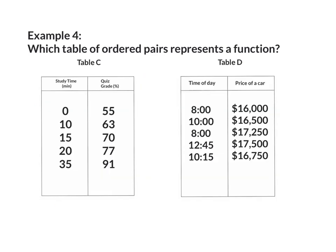Example 4, which table of ordered pairs represents a function? In table C, I have study time and quiz grade. My first column will always be my input, and my second column will always be my output. So my input, I have 0, 10, 15, 20, and 35. Since none of the inputs repeated, they all have their own output. Therefore, this is a function.